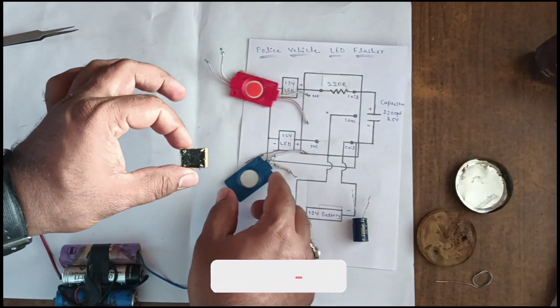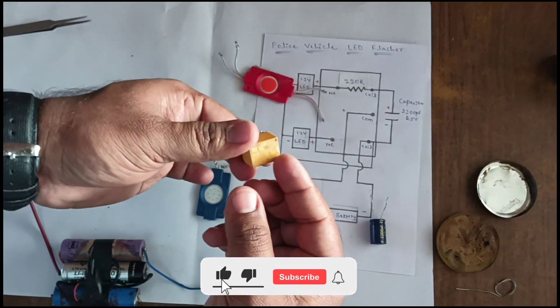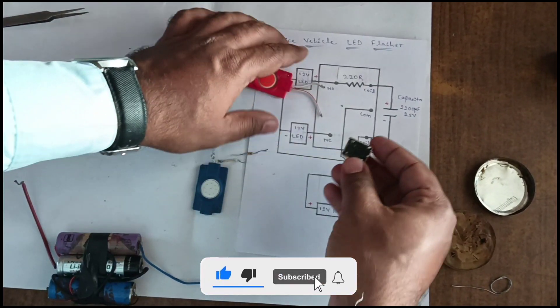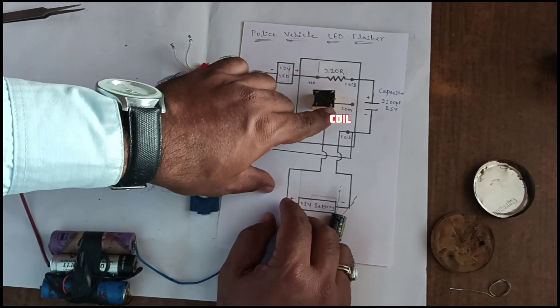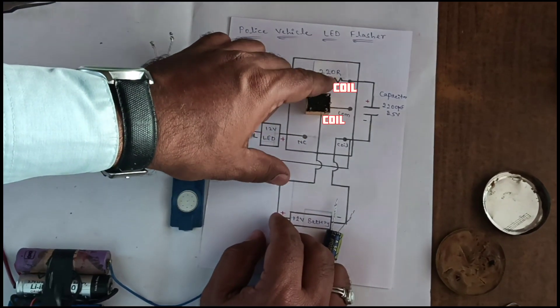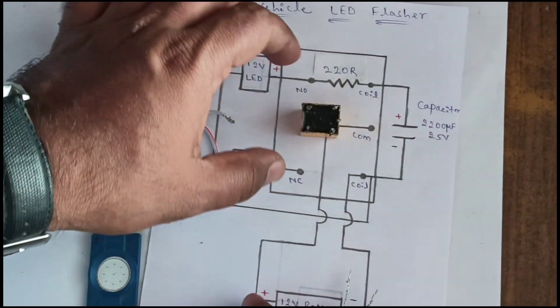Start the connection. This is the 12 volt relay. As shown, this is the NO, NC, coil connection. This is the coil connection and middle one common.